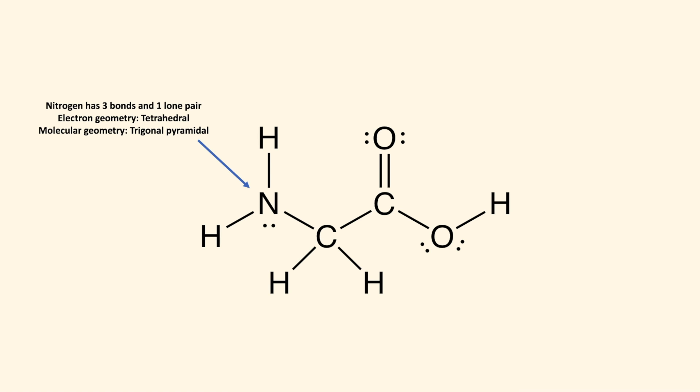The nitrogen has four electron groups, which tells us it has a tetrahedral electron geometry. These electron groups consist of three bonds and one lone pair, which means it has a trigonal-pyramidal molecular geometry. Now we can do this for every interior atom in glycine.